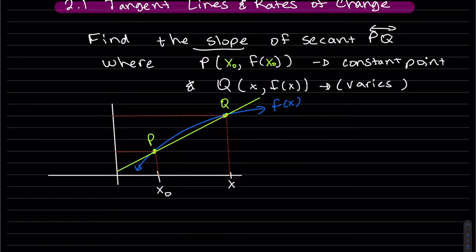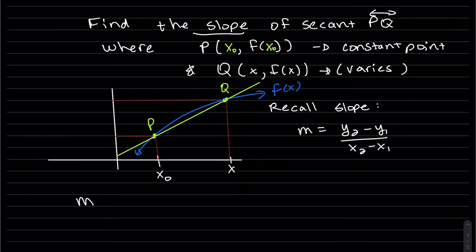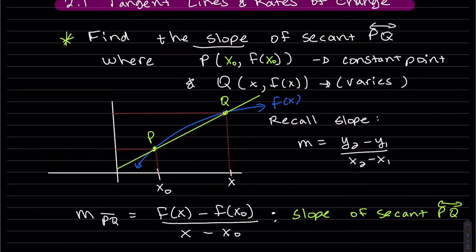So we want to find the slope — let's recall what a slope is. It's rise over run. Rise is the y-values. So the slope of line PQ is going to be f of x. As you can see in the picture, the line PQ is a secant line.